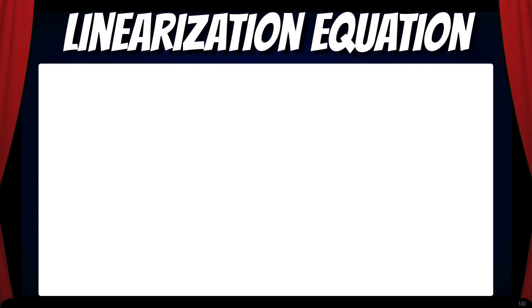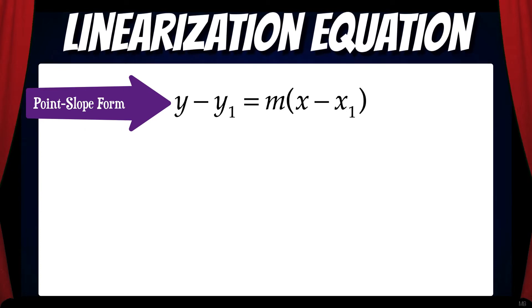To do this, we'll use a linearization equation that we'll derive here. Let's start with point-slope form: y minus y1 equals m times x minus x1. We're going to make some variable substitutions here. Let's call y L of x, y1 f of c, m f prime of c, and x1 c.